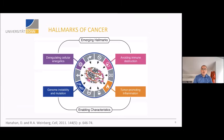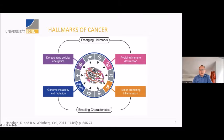Cancer has several hallmarks. A seminal paper in 2011 established basic hallmarks and also emerging and enabling characteristics. Cell metabolism, immune function, and inflammation are important hallmarks, but particularly genome instability and mutations are considered a hallmark characteristic of cancer or cancer-forming substances.